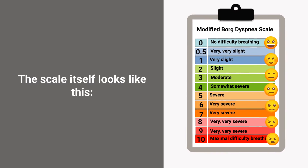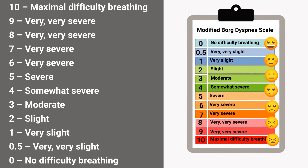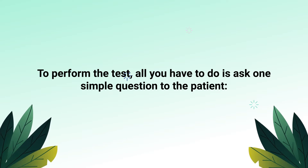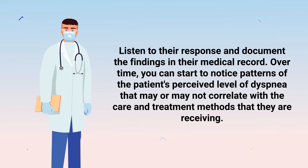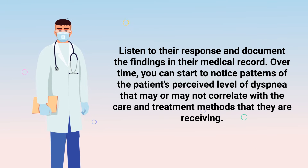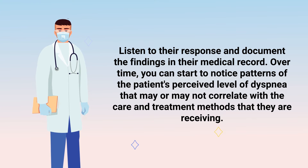The scale itself looks like this. As previously mentioned, it ranges from 0 to 10, with 10 being the worst amount of dyspnea possible and 0 being no dyspnea at all. To perform the test, all you have to do is ask one simple question: 'On a scale of 0 to 10, how hard is it for you to breathe right now?' Then listen to their response and document the findings in their medical record. Over time, you can start to notice patterns in the patient's perceived level of dyspnea that may or may not correlate with the care and treatment methods they are receiving.